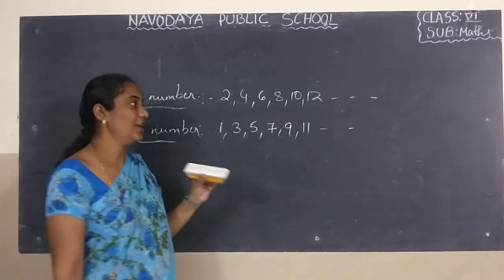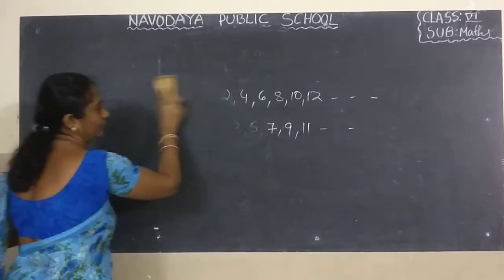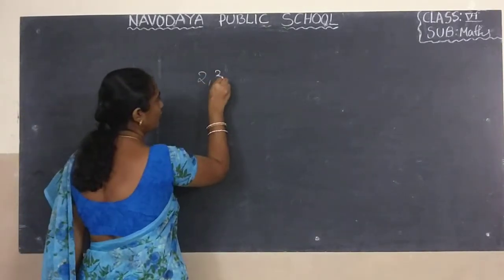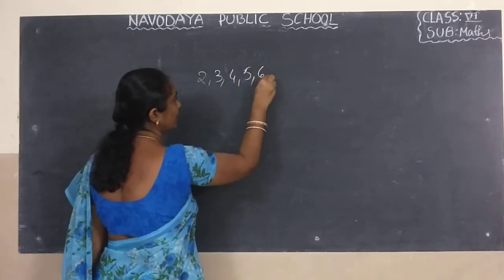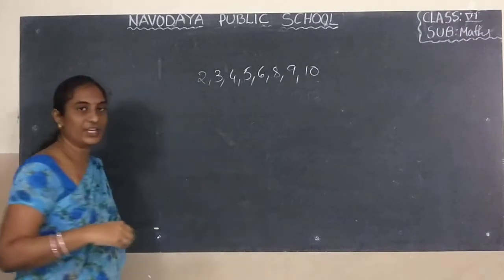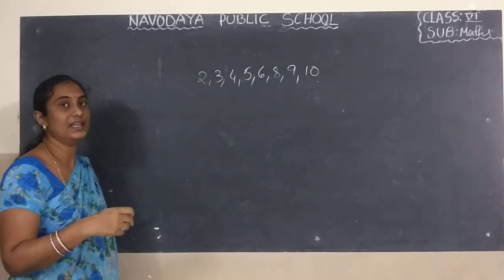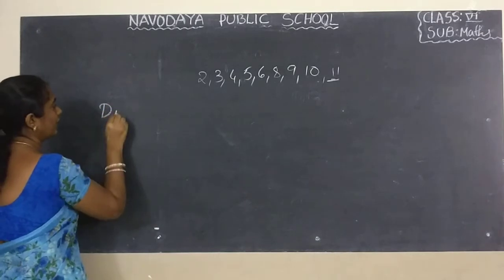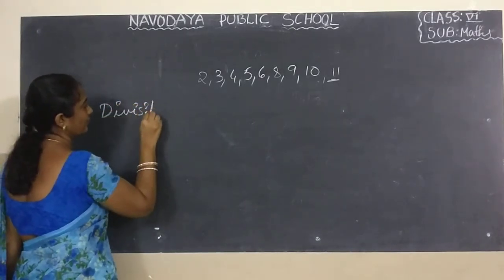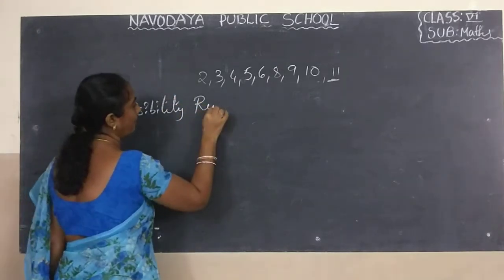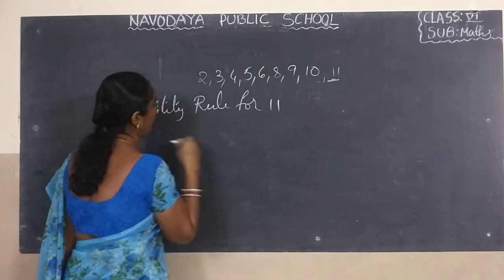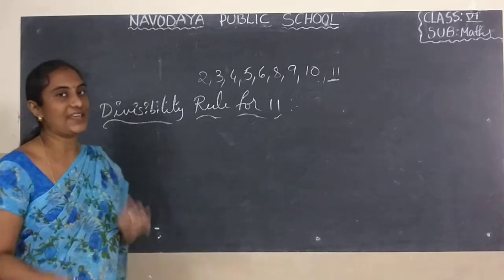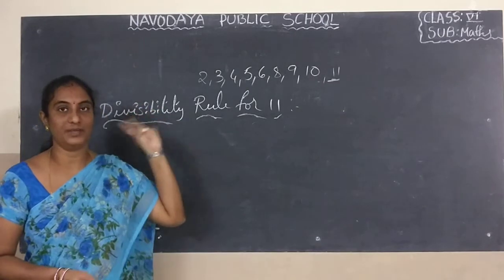Already we completed the divisibility rules for 2, 3, 4, 5, 6, 8, 9, and 10. The last one is 11 — we have to check. Now divisibility rule for 11. Here we have to find out even places and odd places. That's why I reminded you about even numbers and odd numbers.